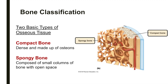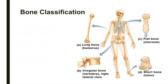Bones may be classified on the basis of their gross anatomy into four groups: long, short, flat, and irregular bones. Long bones are much longer than they are wide, generally consisting of a shaft with heads at either end, and are composed mostly of compact bone. Short bones are typically cube-shaped and contain more spongy bone than compact bone. Flat bones are generally thin, with two wafer-like layers of compact bone sandwiching a thicker layer of spongy bone between them — many flat bones are curved, for example the bones of the cranium. Bones that do not fall into one of these categories are classified as irregular bones, such as the vertebrae.